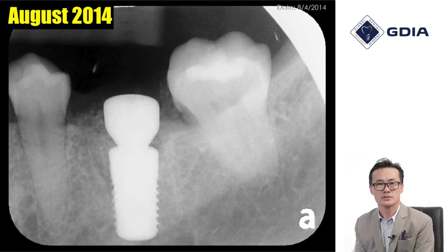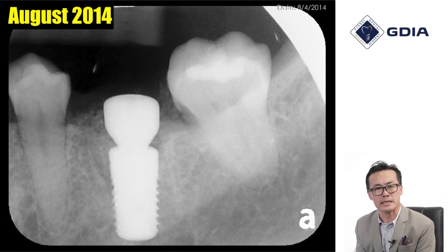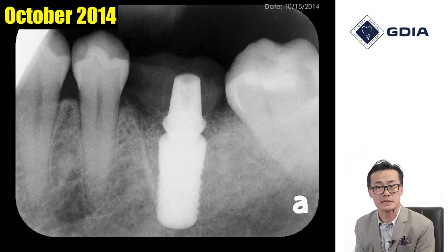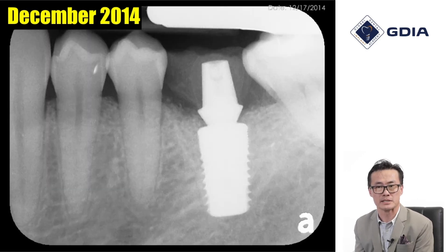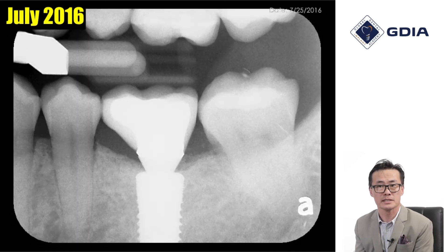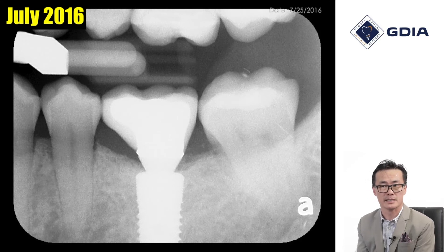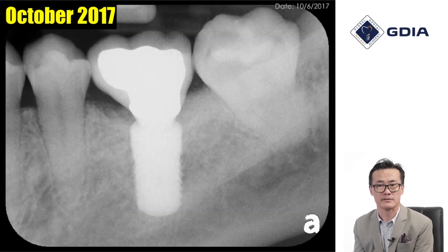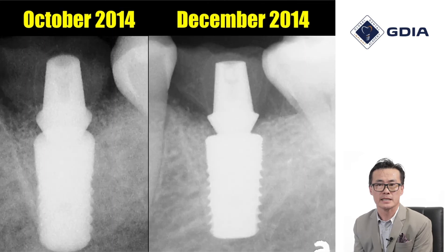Let's review what the periapical radiographs look like. This was immediately after implant placement, this is immediately after the provisionalization stage several months later, we let tissue mature for a few months, then the definitive restoration was delivered and cemented in this radiograph, and then further follow-up is being done.